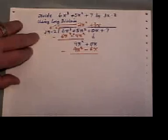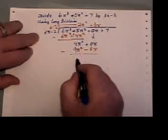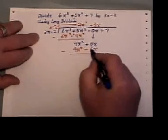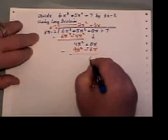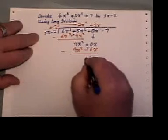And subtract. These first terms will cancel. And 0 subtract negative 6. It's the same as adding. So I end up with positive 6x.